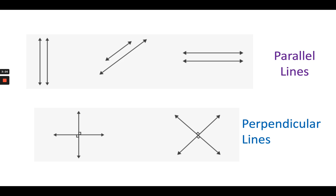Keep in mind our parallel and perpendicular lines — we're going to use them to define shapes. Parallel lines are lines that never touch; they are opposite each other and never touch. Perpendicular lines are lines that cross, but they form at a 90-degree angle. So we're going to be thinking about that 90 degrees when we're looking at these shapes.